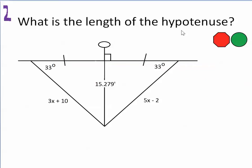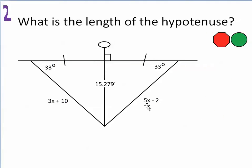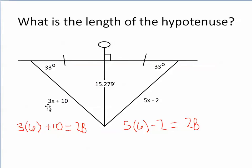Now number 2 uses the same drawing. Using x equals 6, we plug in and get 3 times 6 plus 10 equals 28, and 5 times 6 minus 2 also equals 28. So 28 does equal 28, and the length of the hypotenuse is 28.